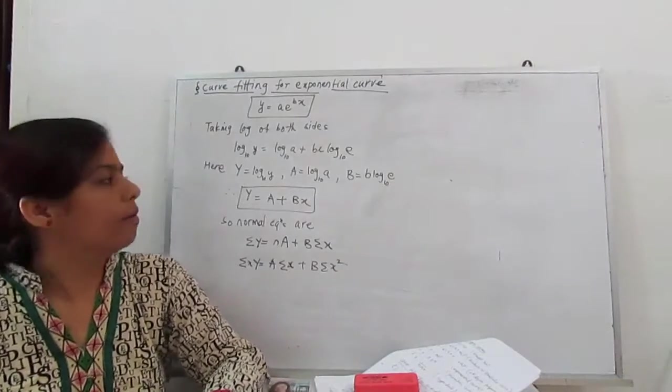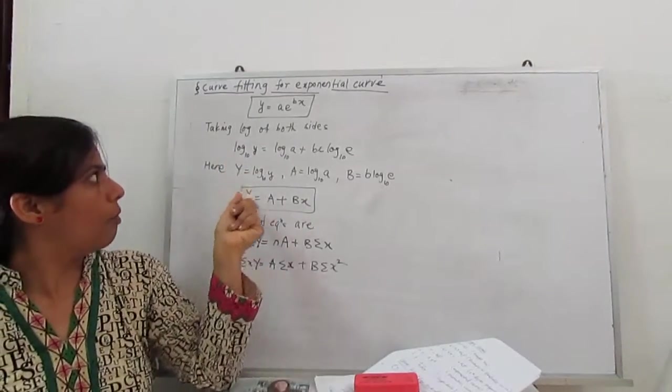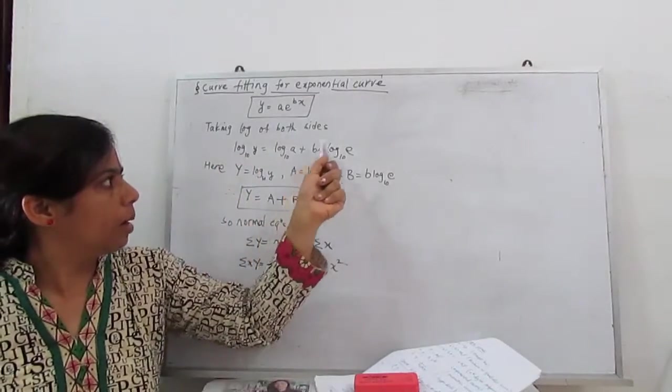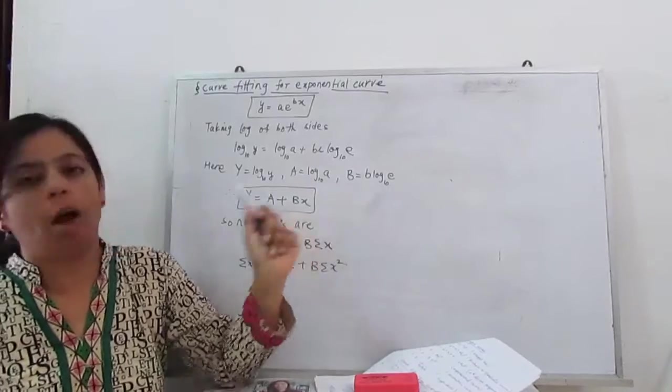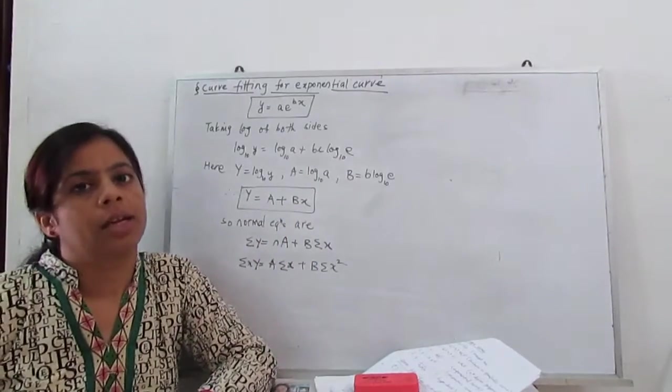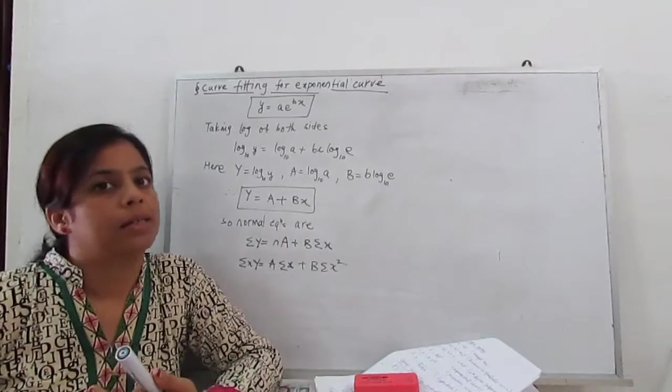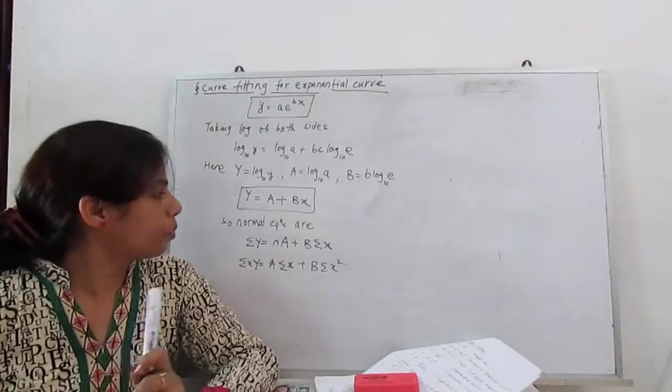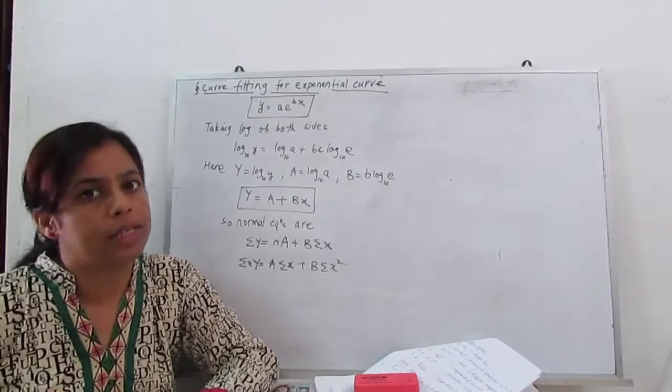what is our new curve look like? Y equals A plus B into x. Now you can see this is our curve, same as curve of the straight line, which we learned already.